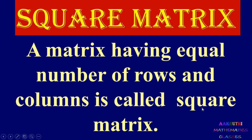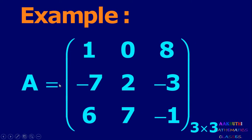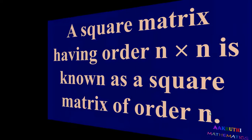Next, square matrix: a matrix having equal number of rows and columns is called a square matrix. Consider example A equal to [1, 0, 8; -7, 2, -3; 6, 7, -1]. The order is 3 by 3 — three rows and three columns — so number of rows and number of columns are the same. Therefore this matrix is called a square matrix.